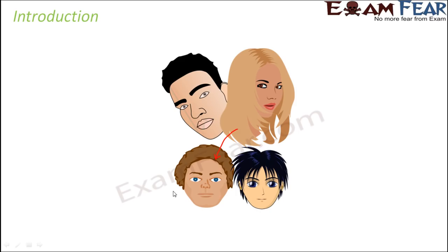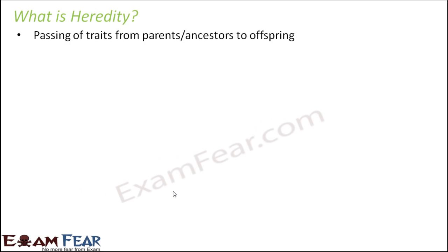Another interesting thing is that it is not only the immediate parents whom a kid resembles. The kid also resembles ancestors — the kid might resemble his grandfather, grandmother, or even great-grandfather. So it is not necessary that traits have to come from the immediate parents; they can also come from ancestors. This is where we talk about heredity. What does inheritance mean? Passing on of something from one generation to the next. So heredity is the passing of traits from parents or ancestors to offspring.